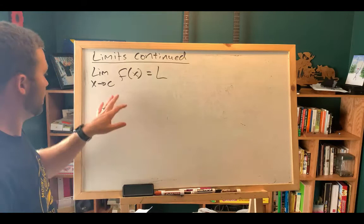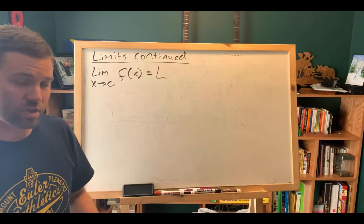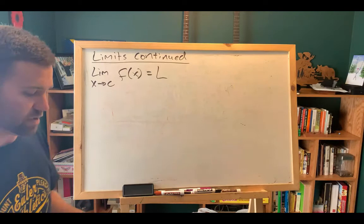So just a quick reminder, when you see something like this, it's read as the limit as x approaches c of the function is equal to L. Or the limit of f as x approaches c is equal to L, L and c being some constant typically.